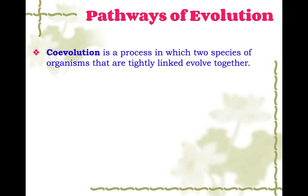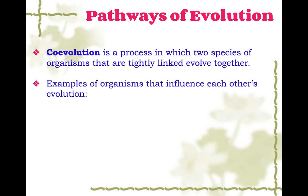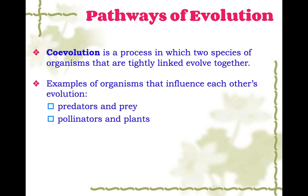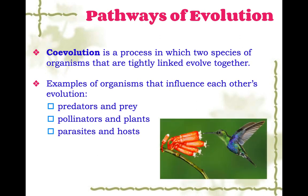Finally, there's co-evolution: a process in which two species that are tightly linked evolve together. Examples include predators and prey, pollinators and plants, and parasites and hosts. The diagram shows pollinators and plants — the length of the flower tube that the pollinator needs to reach into to get the nectar evolves with the length of the beak or tongue of the pollinator.